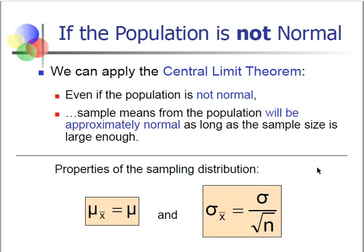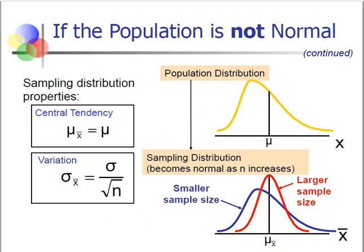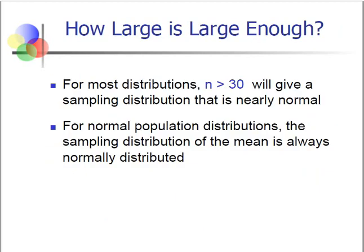Our question is: what is the definition of large enough? Is it 10? Is it 20? Is it 1,000? Is it a million? Our scientific definition for large enough is simply that the sample size should be greater than or equal to 30. If it is greater than or equal to 30, then the sampling distribution is approximately normal.